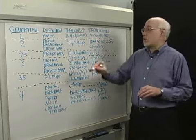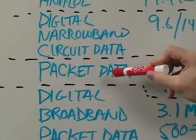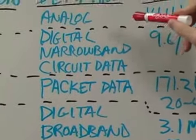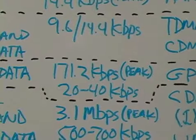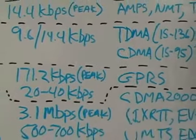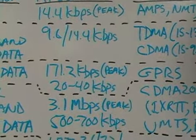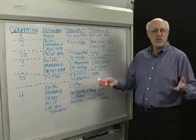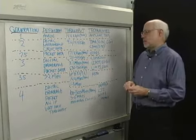Now, there was an interim step on the way, something we call 2.5G. And that was simply putting packet data onto a 2G wireless network. So instead of circuit data, we used packet data. And the key technology here was called GPRS, the General Packet Radio System. Now, this could actually go, in theory, up to 171.2 kbits per second, but most users saw, say, 20 to 40 kbits per second. And again, this is still available in some markets as well.